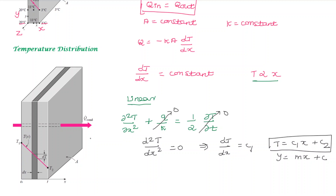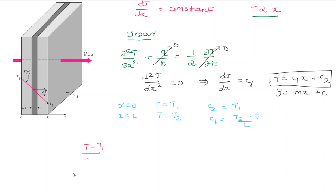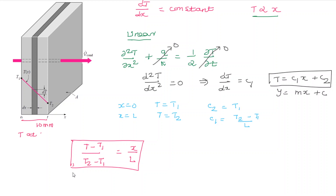Applying boundary conditions: at x equals 0, T equals T1; at x equals L, T equals T2. Substituting into the equation: C2 equals T1 and C1 equals (T2 minus T1)/L. The resulting temperature distribution is: (T minus T1)/(T2 minus T1) equals x/L. For example, if the slab is 10 mm thick and x equals 2 mm, with known T1 and T2, we can find the intermediate temperature.